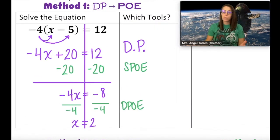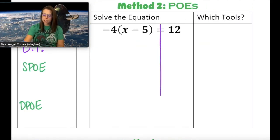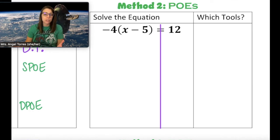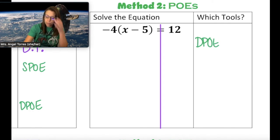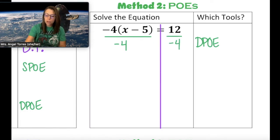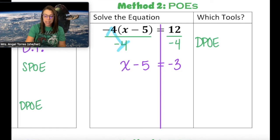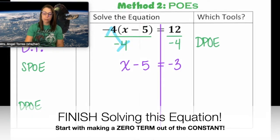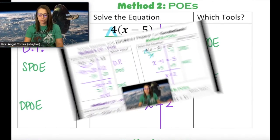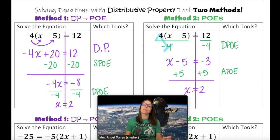Now, instead of checking, we're going to solve this same equation again, this time only using our properties of equality. To avoid having to deal with the changes that come from distributing a negative, you can always use division property instead. I start off with DPOE and divide both sides by negative 4. That creates a big 1 and leaves us with x minus 5, and positive 12 divided by negative 4 becomes negative 3. I still end up with x equals 2. Since you end up with x equals 2 in both methods, it really doesn't matter which one you choose. So did you prefer distributing first or DPOE first?